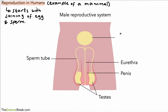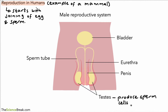We also have a sperm tube, and just so you can see, I've also included the bladder in this diagram. The testes have an important role — they produce sperm cells.